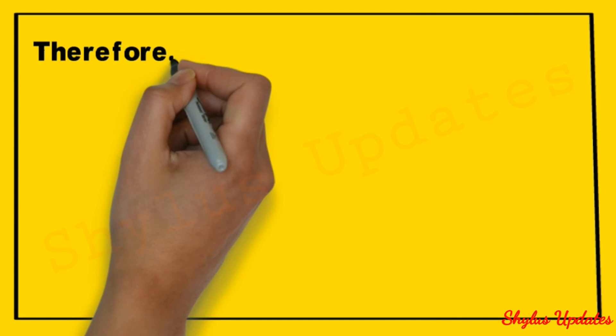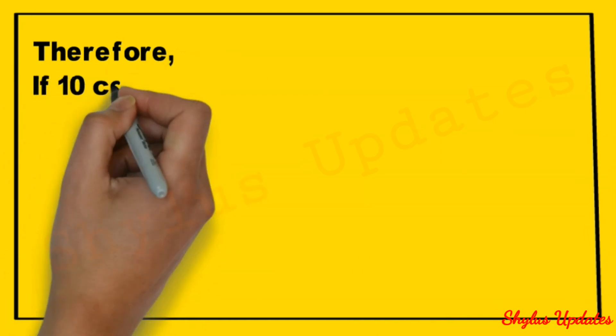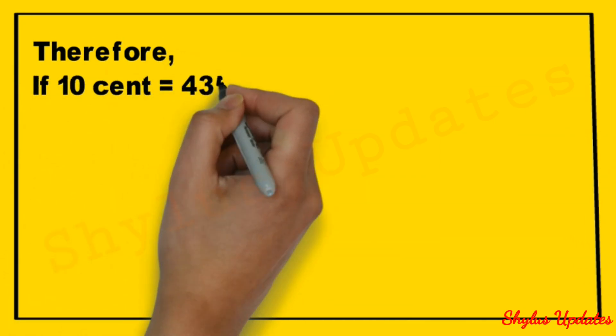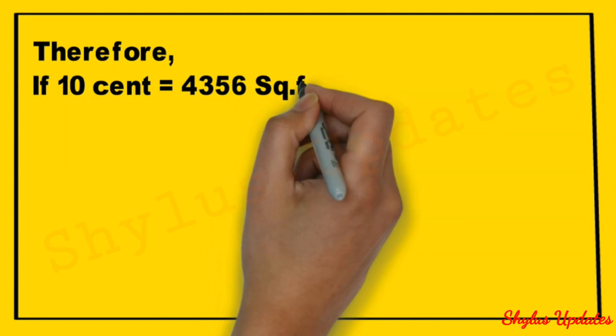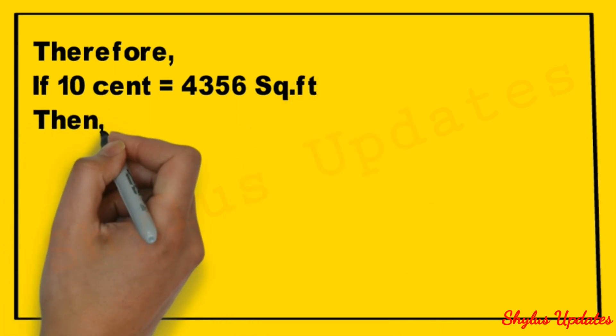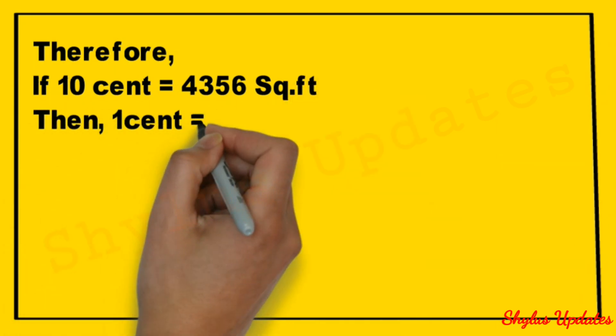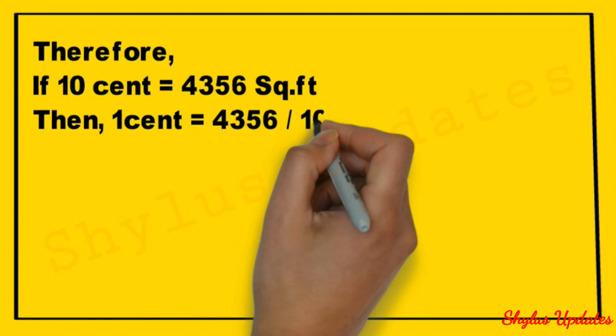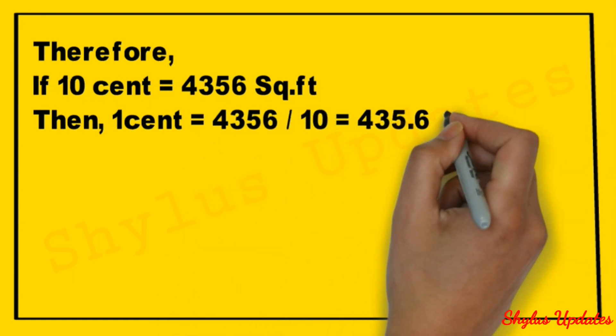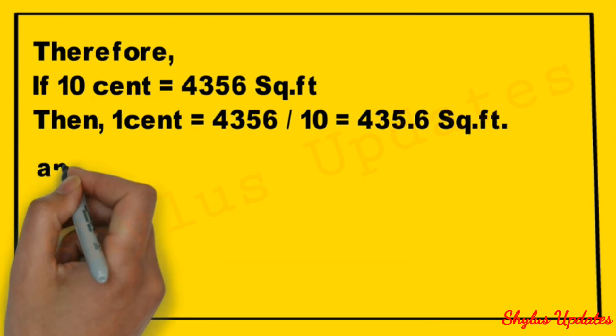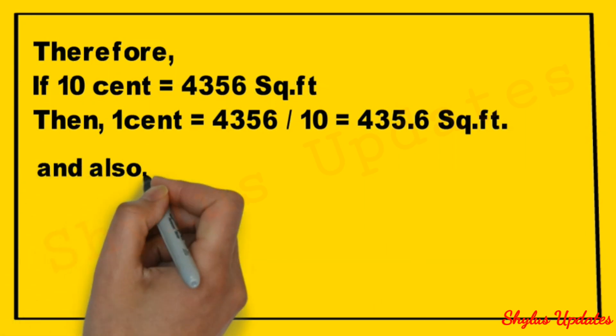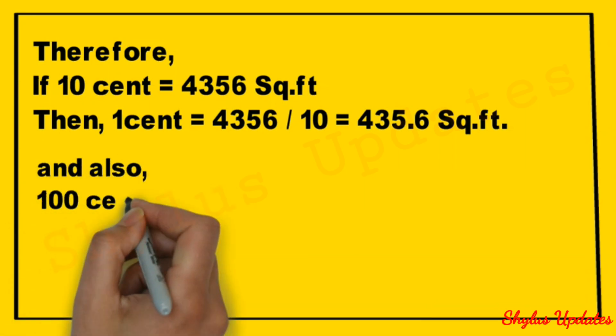Therefore, if 10 cent is equal to 4,356 square feet, then one cent is equal to 4,356 upon 10, which is equal to 435.6 square feet. And also, 100 cent is equal to 4,356 into 10, which is equal to 43,560 square feet.